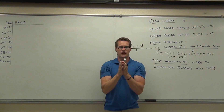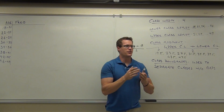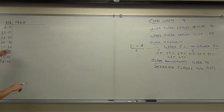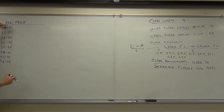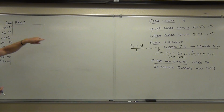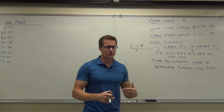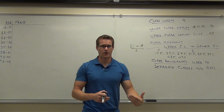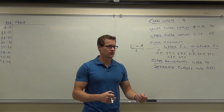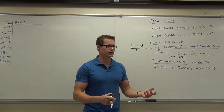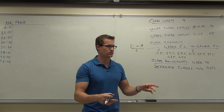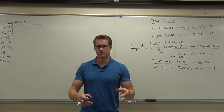Class boundaries are the value right in between your upper class limit for one class and the sequential lower class limit for the next class. You can average them — add them just like you did the class midpoints and divide by two. Or you can just think about what's right in between 21 and 22. It's 21.5. If you add 21 and 22 and divide by two, you get 21.5.